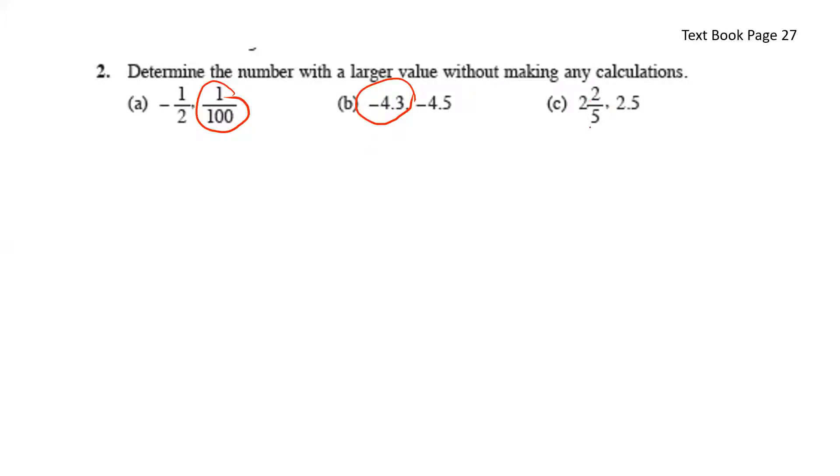Next, 2, 2 over 5. We cannot compare fraction and decimals, which means we'll have to change this to a decimal number and that will be 2.4 in comparison to 2.5. So here the larger number without question will be 2.5.